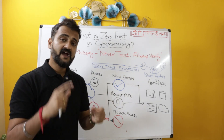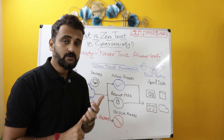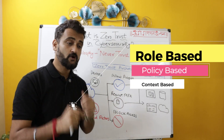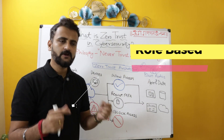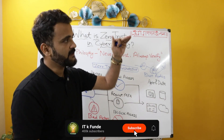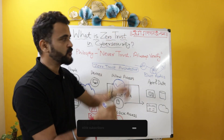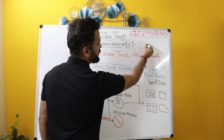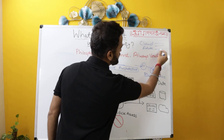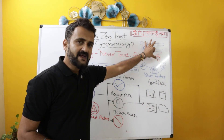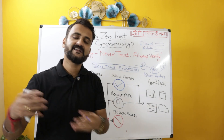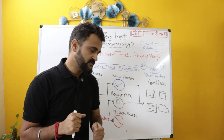Another principle of zero trust is that every access given should be role-based, policy-based, or context-based. Role-based access control means there is a predefined role with a set of policies. For example, if you are a cloud admin, there would be a policy attached defining what you can do as a cloud admin — that is role-based access control. Similarly, you have context-based and policy-based access control as well.